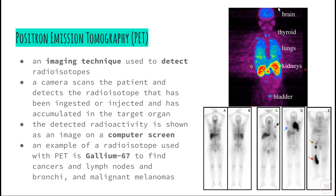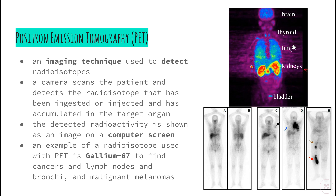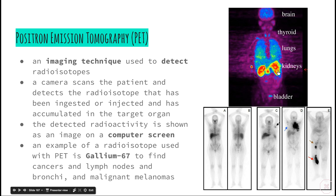A piece of technology used to detect radioisotopes is a positron emission tomography machine, sometimes referred to as a PET machine. Its job is to detect the radioisotopes in organisms. A camera scans the patient and detects the radioisotope that has either been ingested or injected and accumulated in a target organ. For example, in the top image the target organ was the kidneys — the patient has either drunk a solution containing the radioisotope or had it injected directly into their bloodstream, and it accumulated in the kidneys.